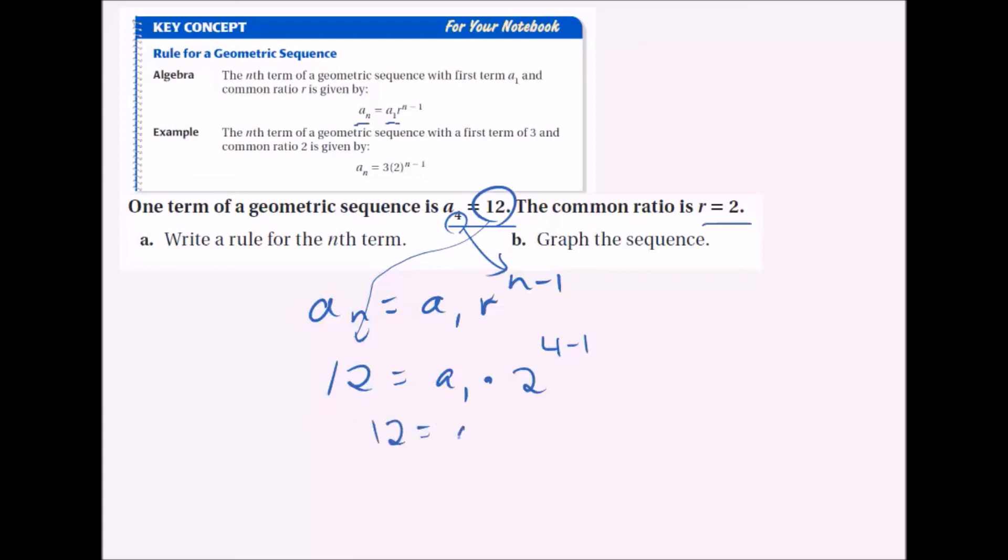So we have 12 equals a_1 times 2 cubed. 2 times 2 times 2 is 8. So then we have 12 equals a_1 times 8. a_1 equals 12 over 8, which is 3 halves. So I solved a_1 equals 3 halves.